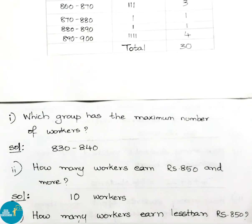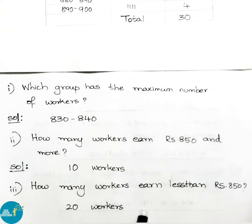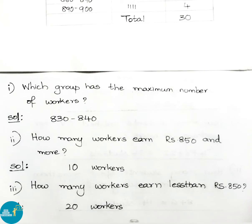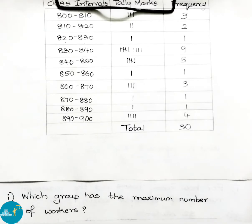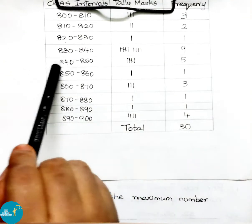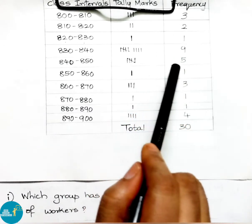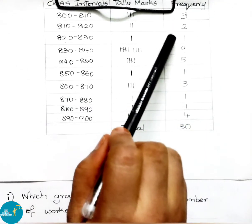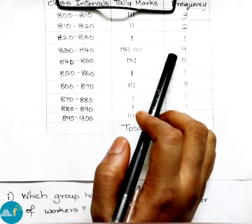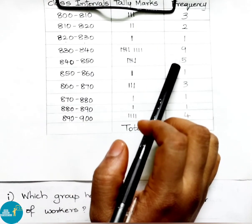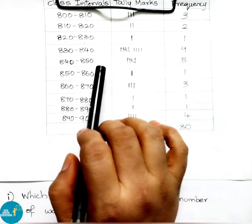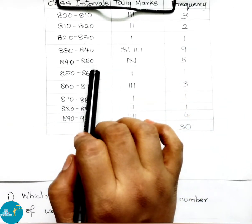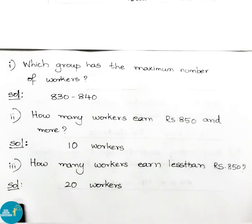Question 3: how many workers earn less than 850 rupees? Looking at the frequency table up to 850, we count: 3+2+1+9+5 = 20. So 20 workers are earning less than 850 rupees wages.